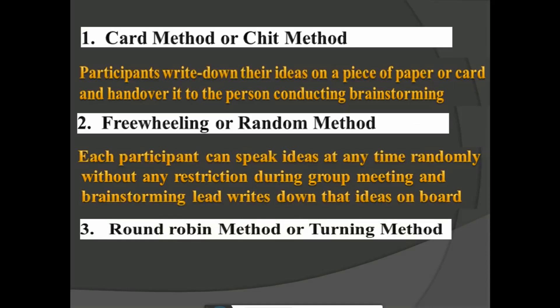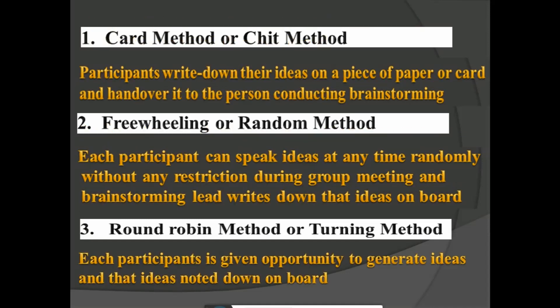Finally, the ideas are noted down on the board to identify the important ideas that help find out the conclusion of the specific problem. The third one is the round robin method or turning method. In this method, each participant is given an opportunity to generate ideas, and those ideas are noted down on a board. Each participant in the group is provided an opportunity to generate their ideas to help find out the solution to the specific problem.